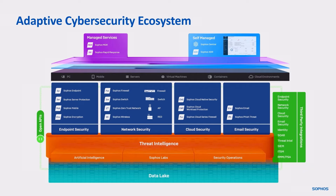Those products range from endpoint security solutions to network security, to cloud workloads, over to email. And then that black bar, second from the top, shows some examples of different types of instances we can protect — whether they are PCs or laptops, mobile devices, servers, virtual machines, cloud containers, and cloud environments.